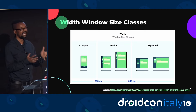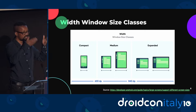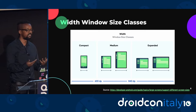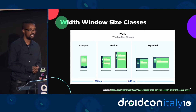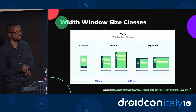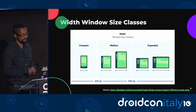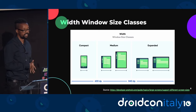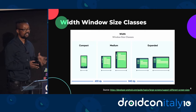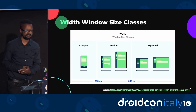Since most apps on the market generally have scrolling content, the width window size class is the one that is recommended to be used — you won't really use the height window size class. Within this presentation, I'll be focusing mostly on the width window size class. You can see the different window size classes here: the compact window size class on the far left.